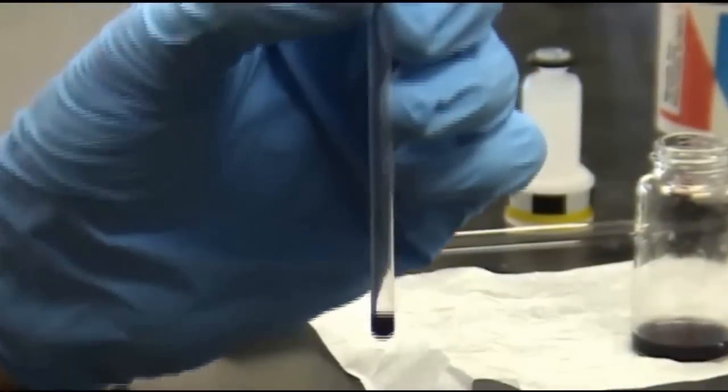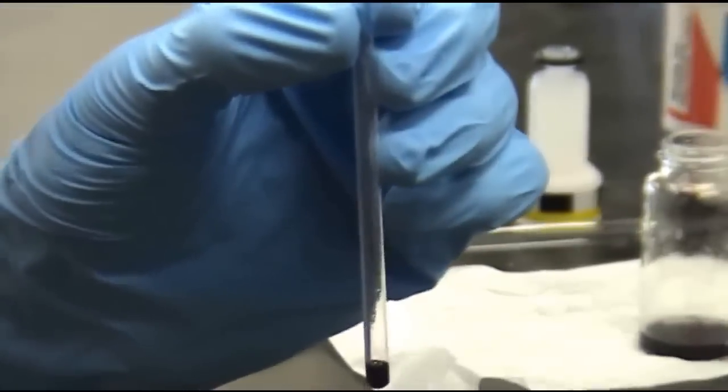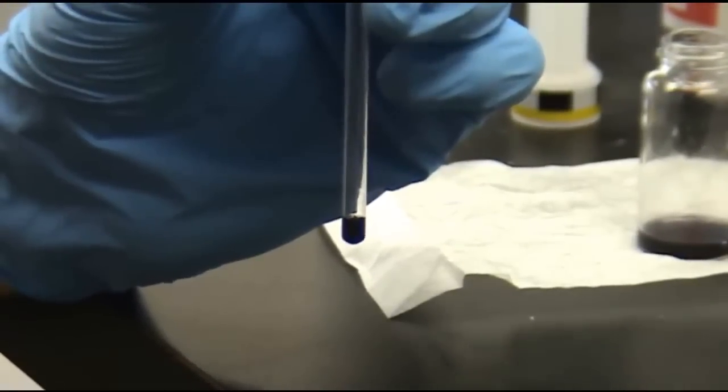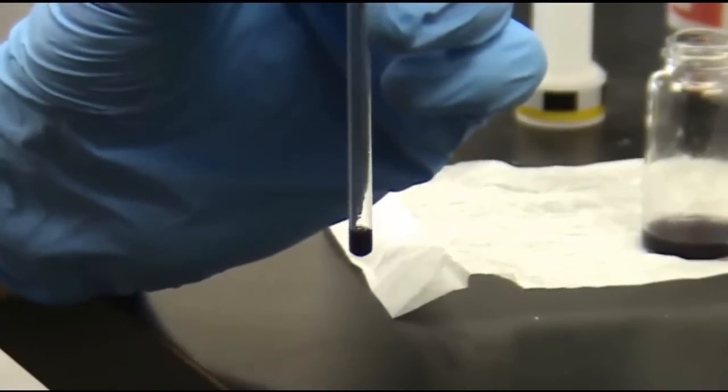Next we'll need to add deuterated solvent. In this case, we're using chloroform. Using a clean Pasteur pipette, add enough so that the height of the liquid in the tube is about four centimeters.